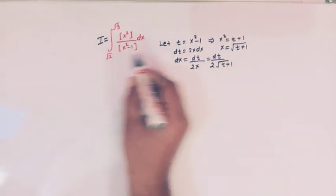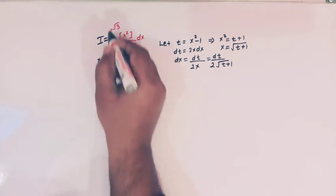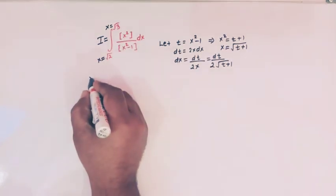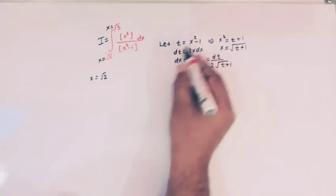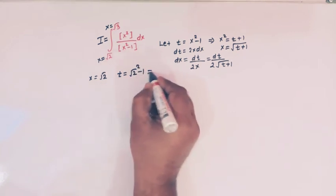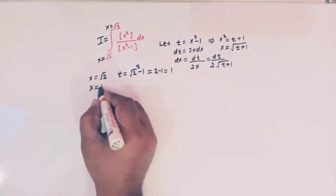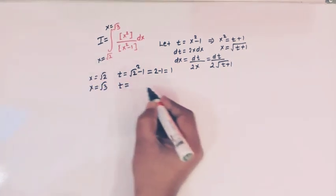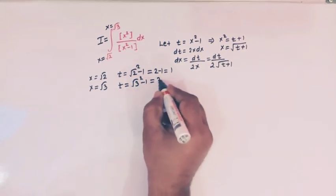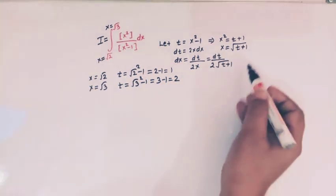Now let us change the limits. Here x varies from root 2 to root 3. When x is square root of 2, t is root 2 squared minus 1, that is 2 minus 1, which equals 1. When x is square root of 3, t is root 3 squared minus 1, that is 3 minus 1, which equals 2.